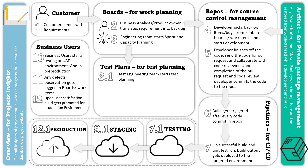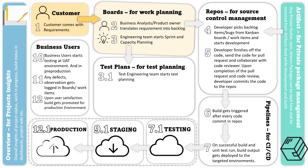Now we will look into the overall flow of DevOps from customer to production. We begin with the customer — the customer has come up with requirements, and these requirements will be converted into a backlog by the business analyst and then the product owner.